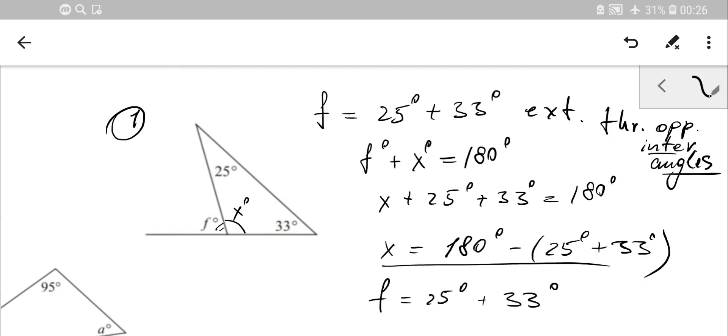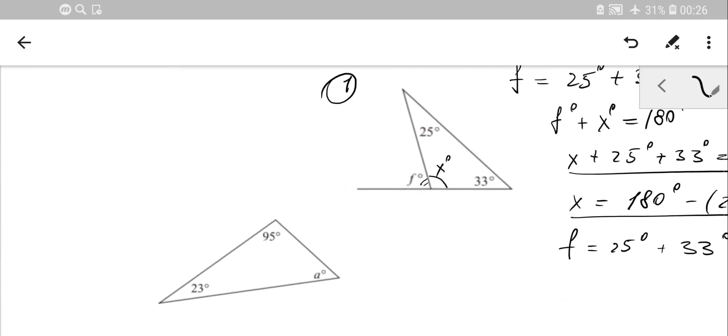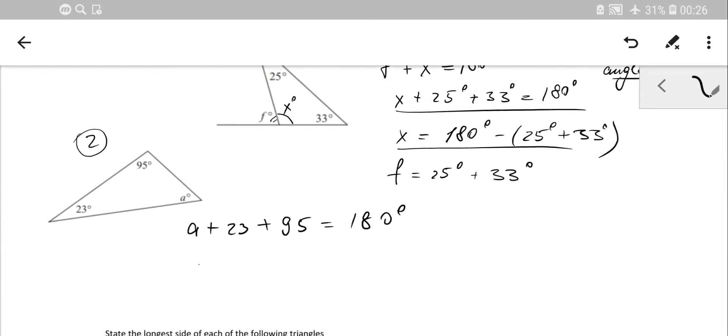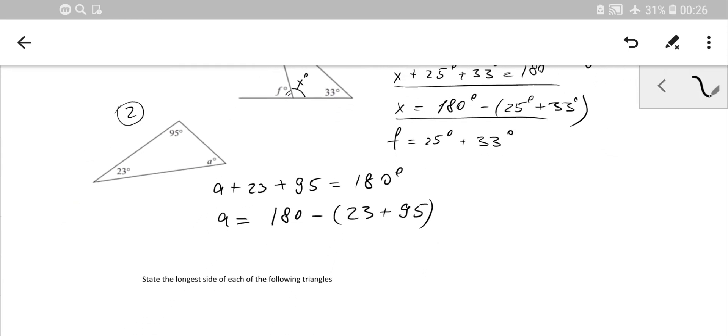That's exterior through opposite interior angles in the triangle. Just remember this property of the triangle. Let's go to number 2. Here you have simply A plus 23 plus 95, it will be equal to 180. So from there we can figure out that A is 180 minus the sum of 23 plus 95, and you'll be able to calculate it.